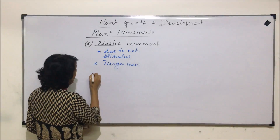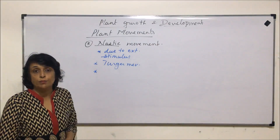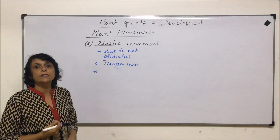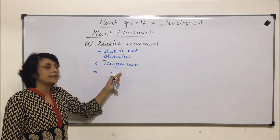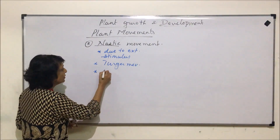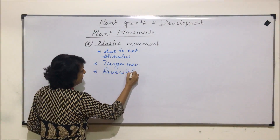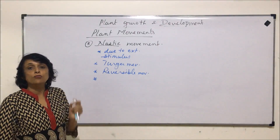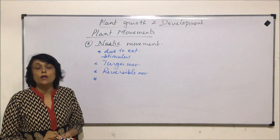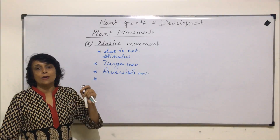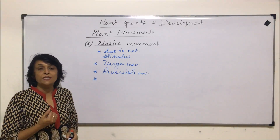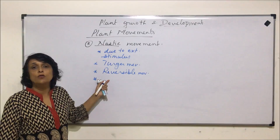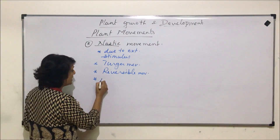As they are turgor movements, they are reversible — if water goes into the cell, the cell becomes turgid, and if exosmosis takes place, the cell becomes flaccid. So these are reversible movements. One more thing: these movements are non-directional. In tropic movements, a plant can be positively or negatively phototropic, but here no such direction is specified.